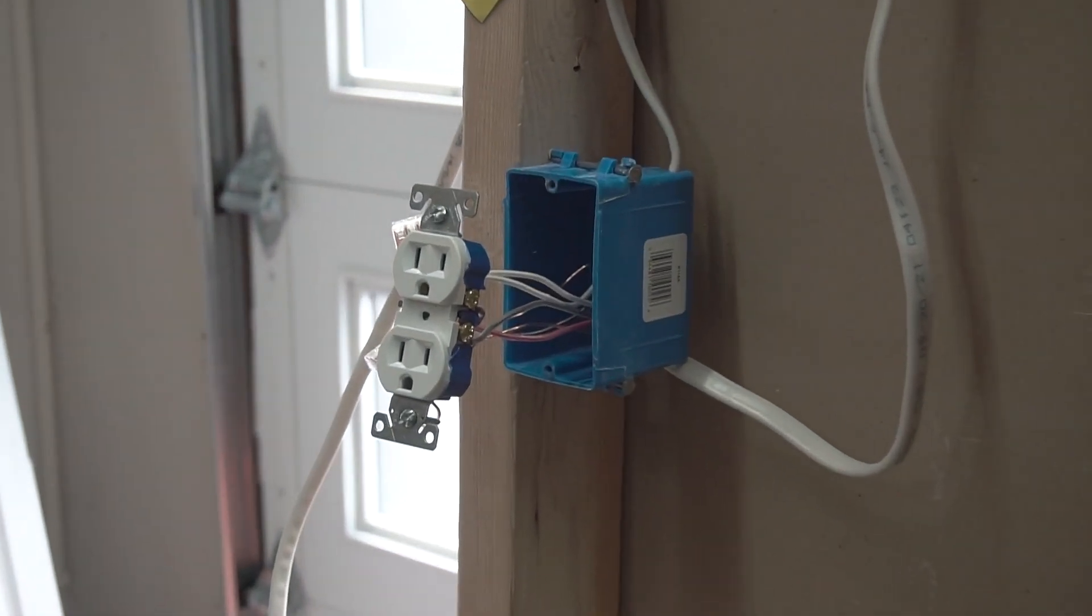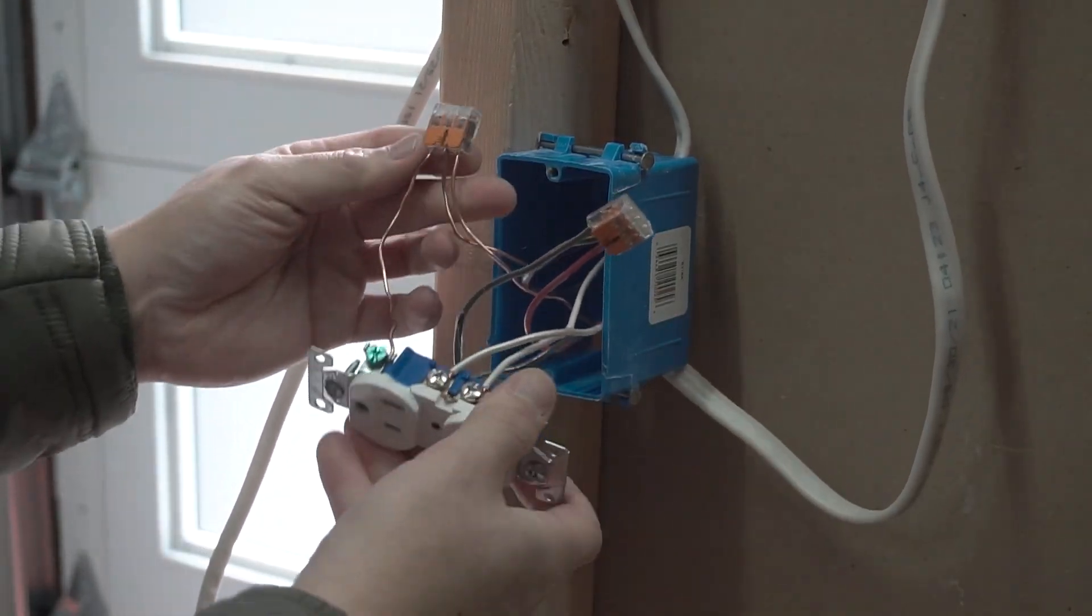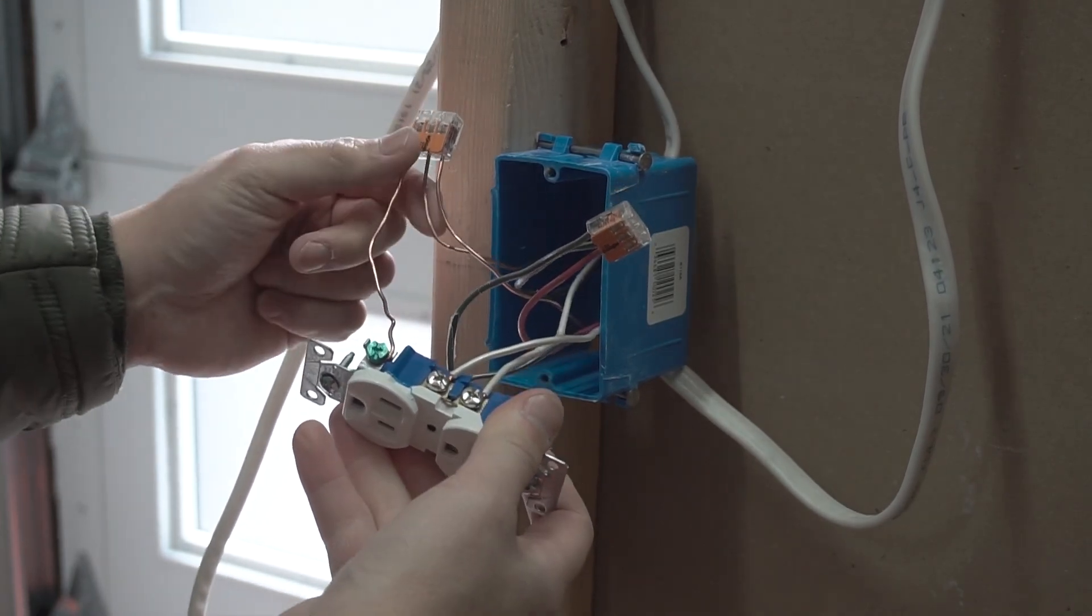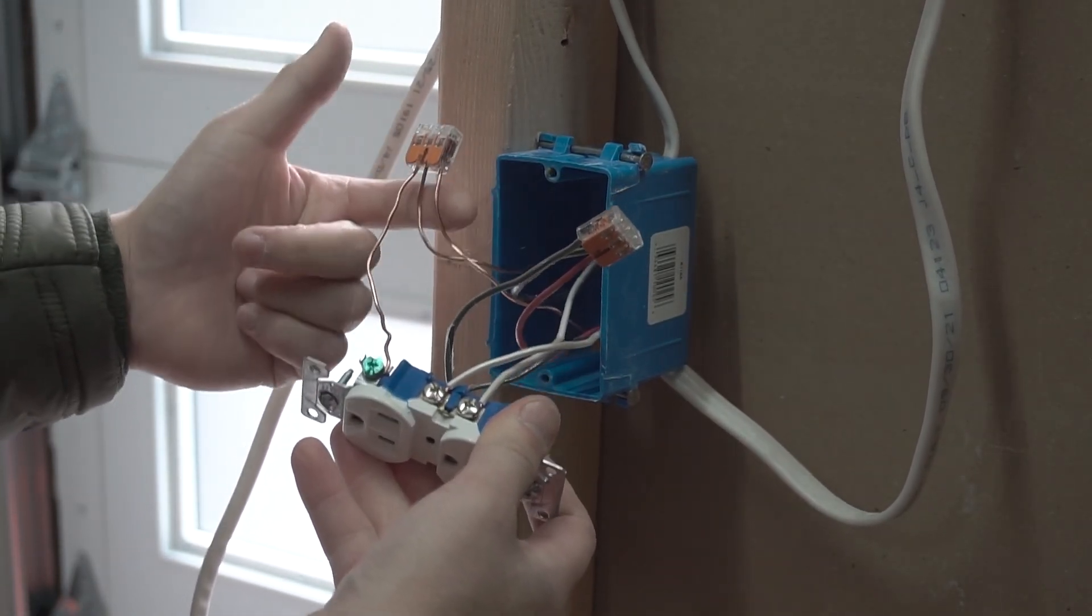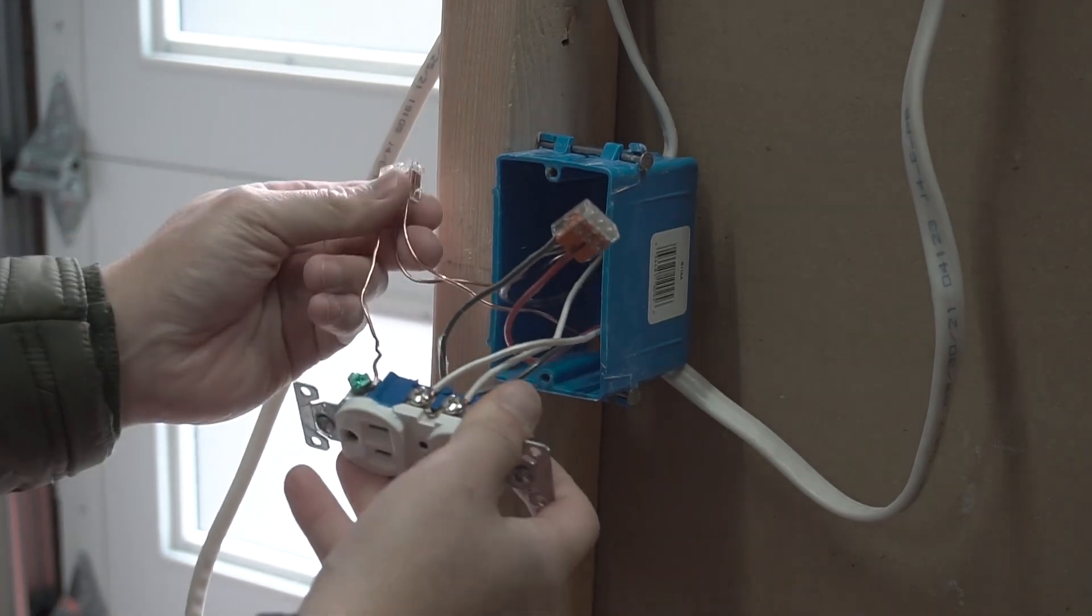Before we follow this 14-3 to that last J-Box to the switch, let's do a recap on this first J-Box first on everything that's connected. We have all our ground wire. The ground wire from the outlet, the ground wire from the 14-2 power source, and the ground wire from the 14-3 all connected together.